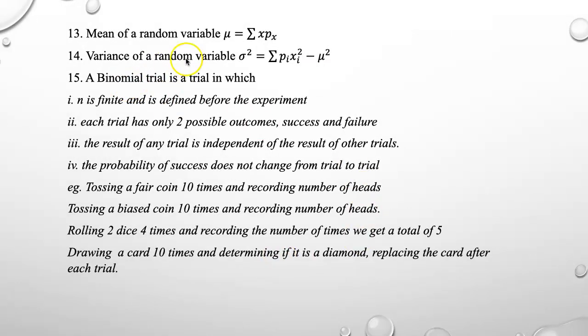Mean of a random variable is denoted by mu and is defined by summation xPx. We also denote the mean mu by expectation of x. Variance of a random variable sigma squared is defined as summation Pixi squared minus mu squared where mu is the mean. Standard deviation is square root of variance.